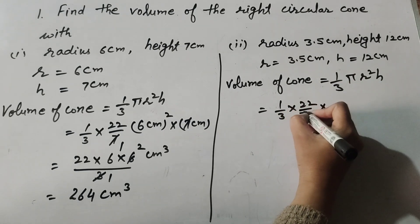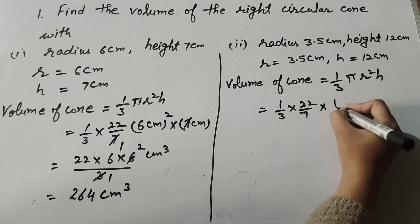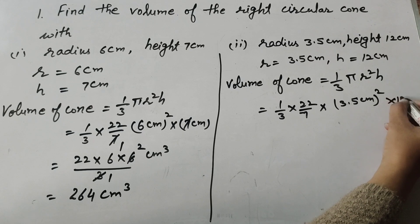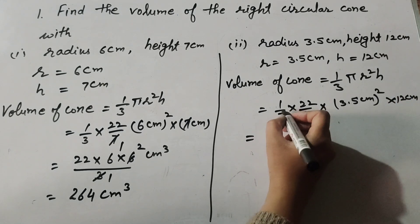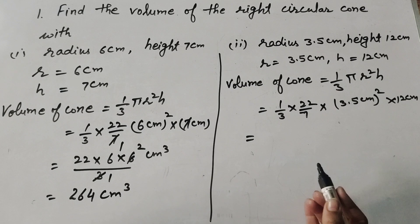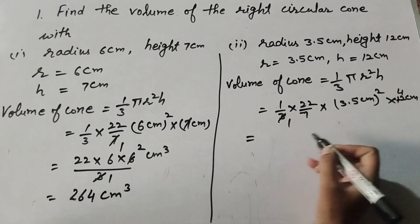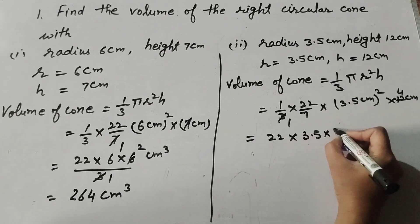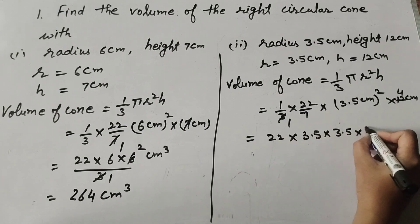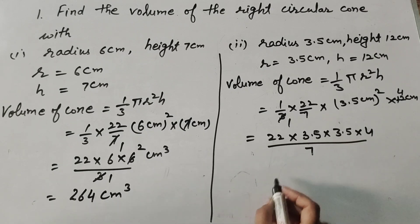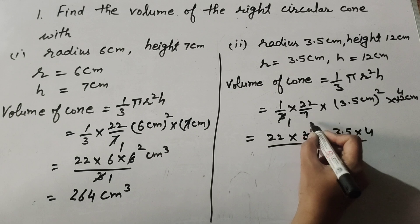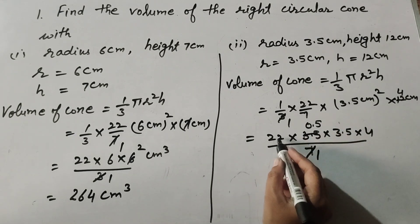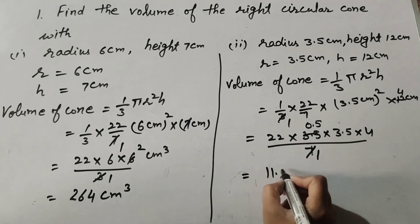Substituting r = 3.5 cm and h = 12 cm: 3 and 12 are both divisible by 3, so we cancel them to get 4. Then we have 22 × 3.5 × 3.5 × 4 / 7. Since 7 and 3.5 are divisible by 7, we cancel them: 22 × 0.5 = 11.